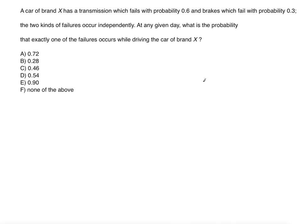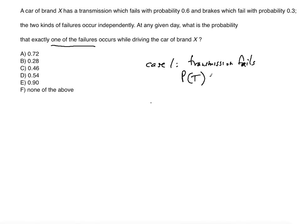In this situation we have two possible cases. We can have one type of failure and the other kind of failure, but they will not occur simultaneously because we're only allowed to have exactly one failure. So Case 1 is: transmission fails.